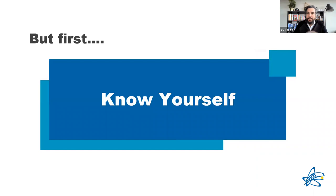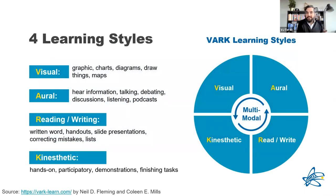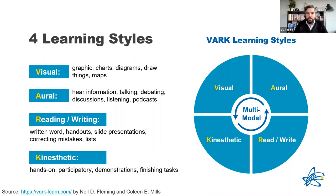An opportunity here is to think about what is your learning style. This model was developed by a teacher in New Zealand, Neil Fleming, and his colleague Colleen Mills. It's one framework that categorizes learning into four types: visual — learning from graphs and charts; oral — you like to listen, audio books, podcasts, talking to people about a topic; reading or writing — the written word, handouts, taking notes, highlighting textbooks.